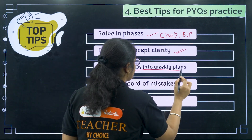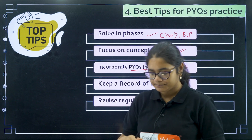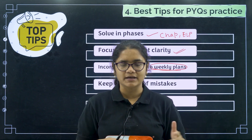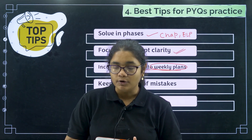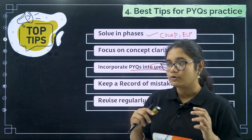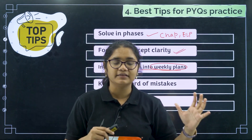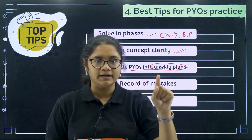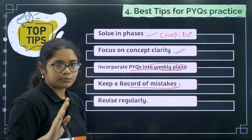The third tip is to incorporate PYQs into your weekly plans. Suppose this week's target is aldehydes, ketones, and carboxylic acids — you need to not only complete the lectures but also solve the previous year questions for those topics. In a week of seven days, put aside at least one day for solving previous year questions. This is part of following our '100 Hard Challenge for KSA 2025' available on our channel.